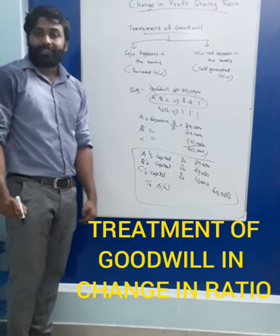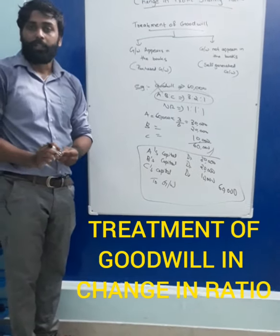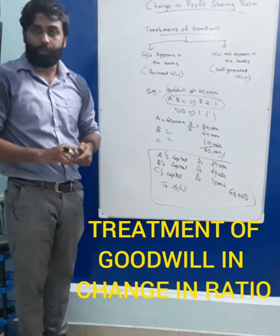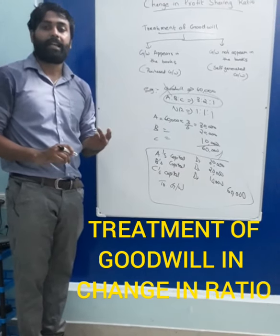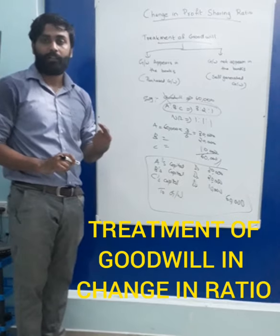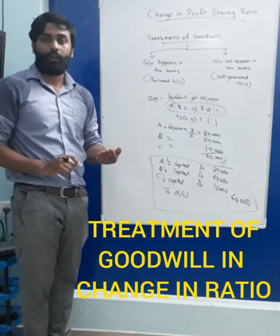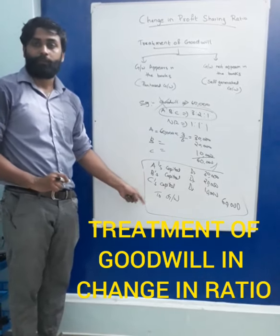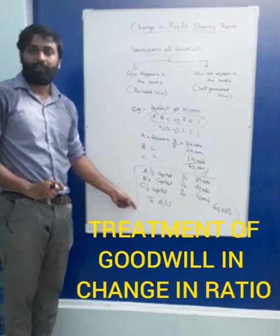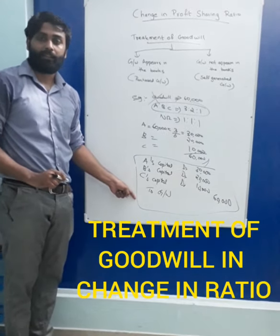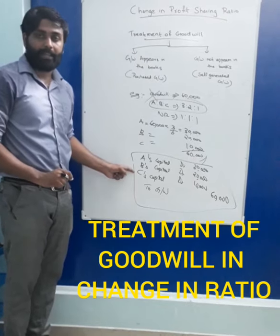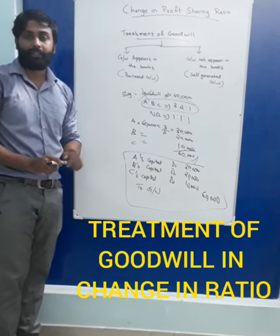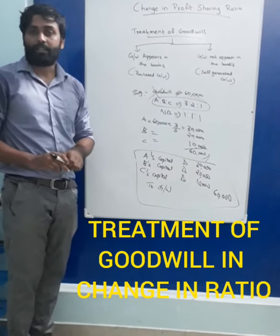This is the treatment of purchased goodwill. When there is any purchased goodwill and a change in profit-sharing ratio, the partners must divide their purchased goodwill in the old ratio, their capital accounts are debited, and the total value of goodwill is credited. A's capital debit, B's capital debit, C's capital account — to Goodwill. This is the treatment of purchased goodwill.